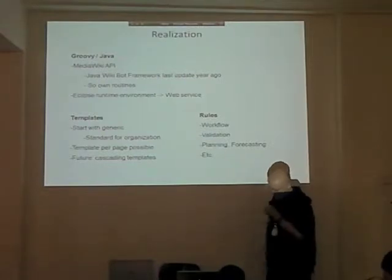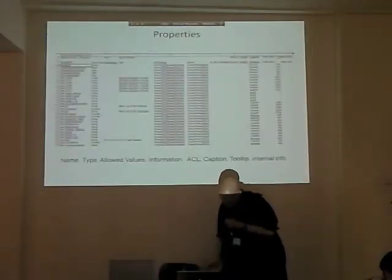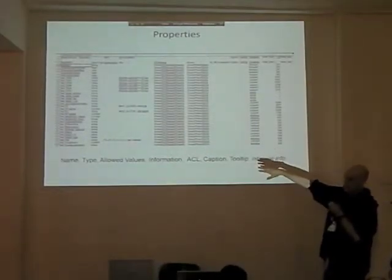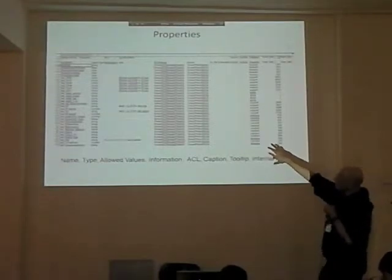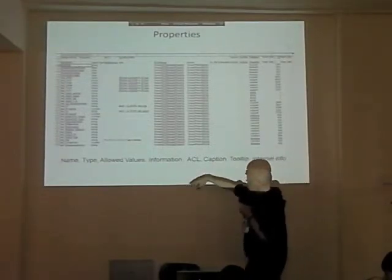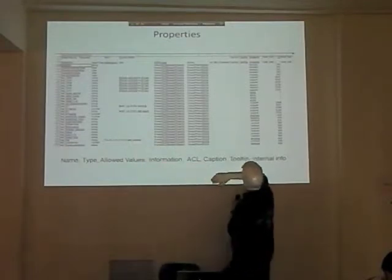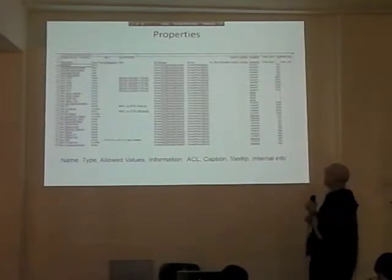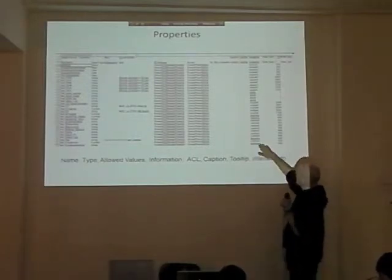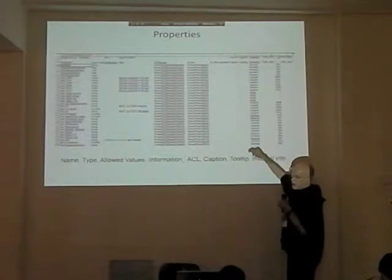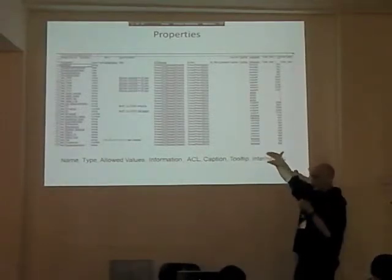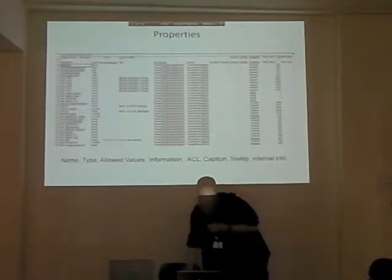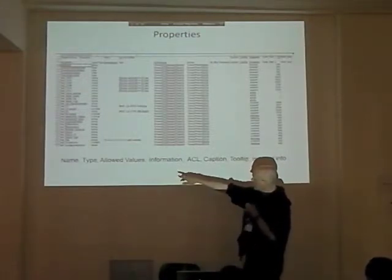I'd like to go a little bit into the rules. There are actually two pages. On one page I define all the properties with a data type and some security settings, and possibly the values that are allowed. There's also a 'do not overwrite' flag if I generate the pages, so pages can be marked as do-not-overwrite. This is actually just to keep the properties correct. I use this to give them an order in the screen. So you have the name, the type, and allowed values.